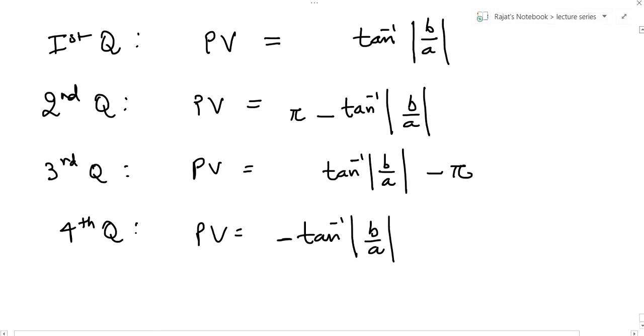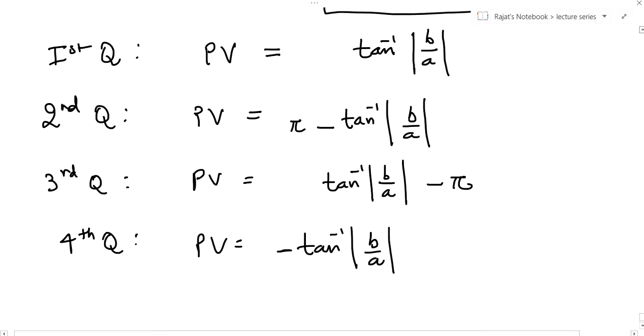Hello friends, we were discussing principal value of argument or principal argument. In the previous lecture I told you that if the point is in the first quadrant, then principal value is tan inverse mod b by a.